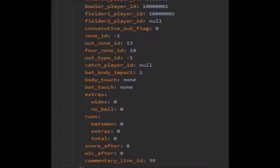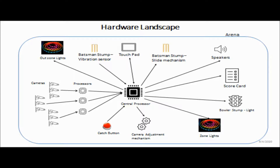Every processor processes two to four cameras' data at a point of time, and a centralized processor analyzes the whole data to determine the final output.